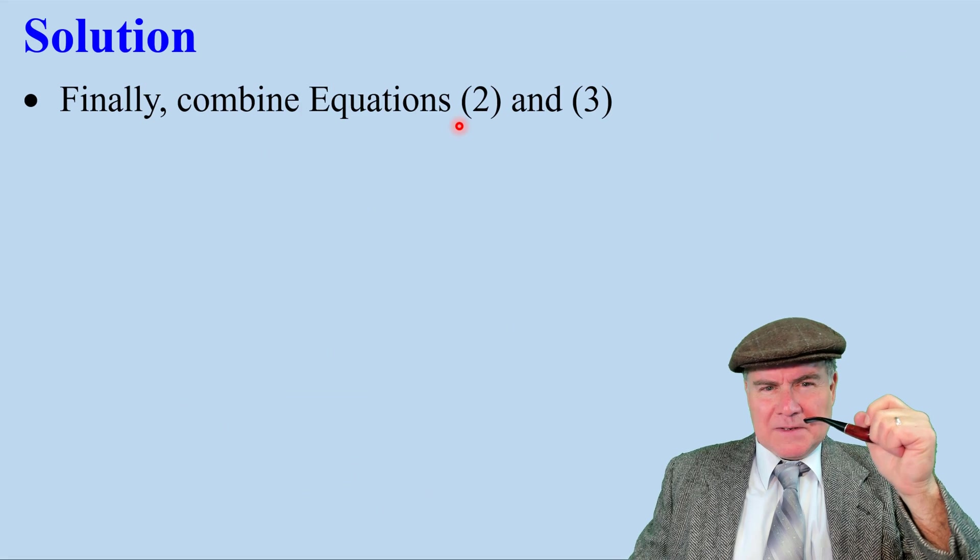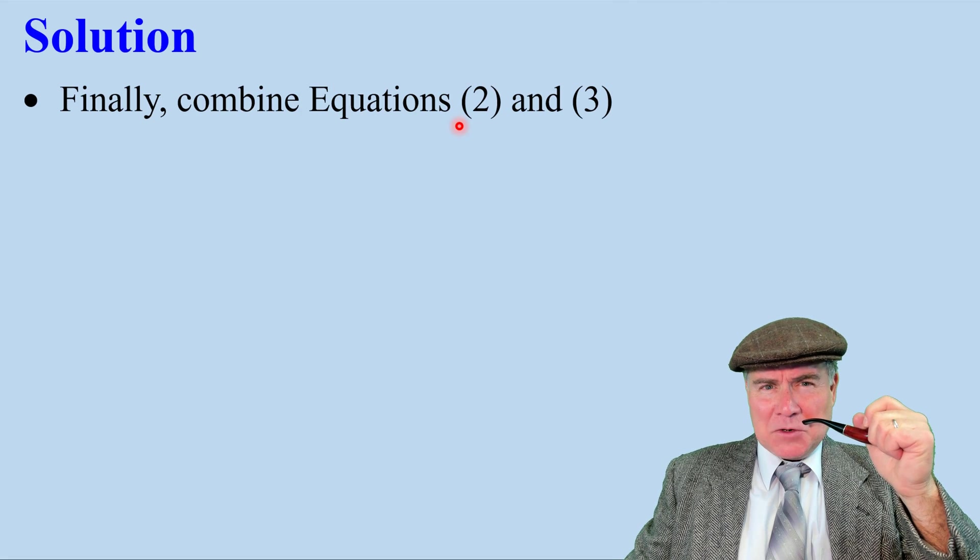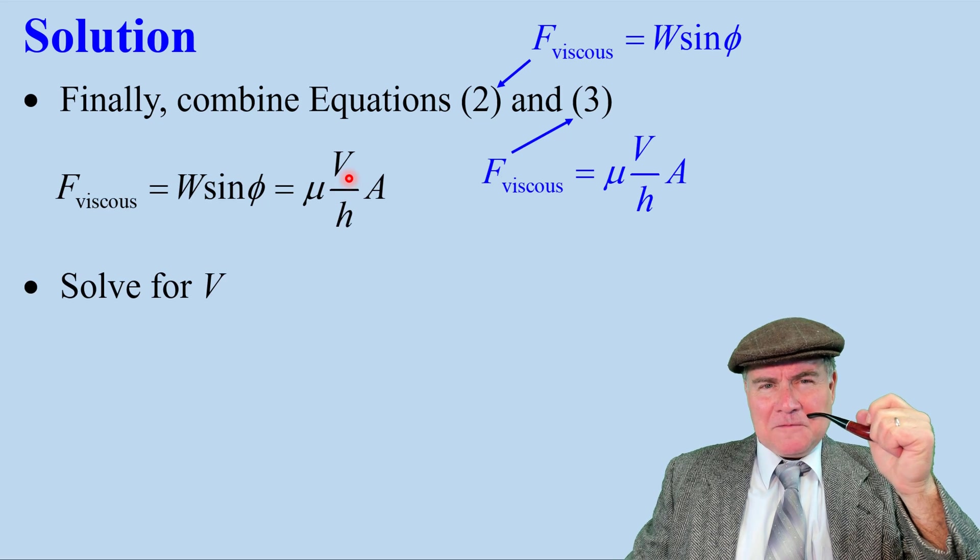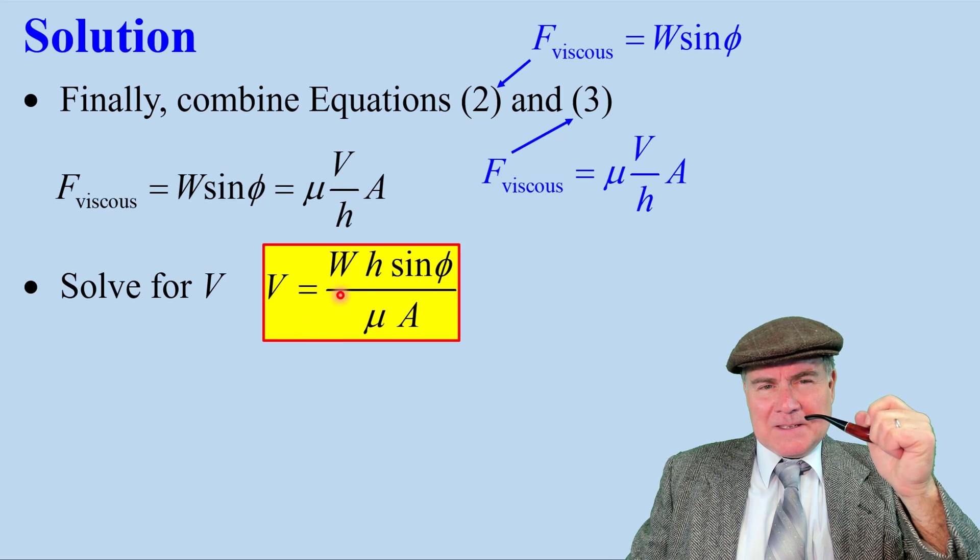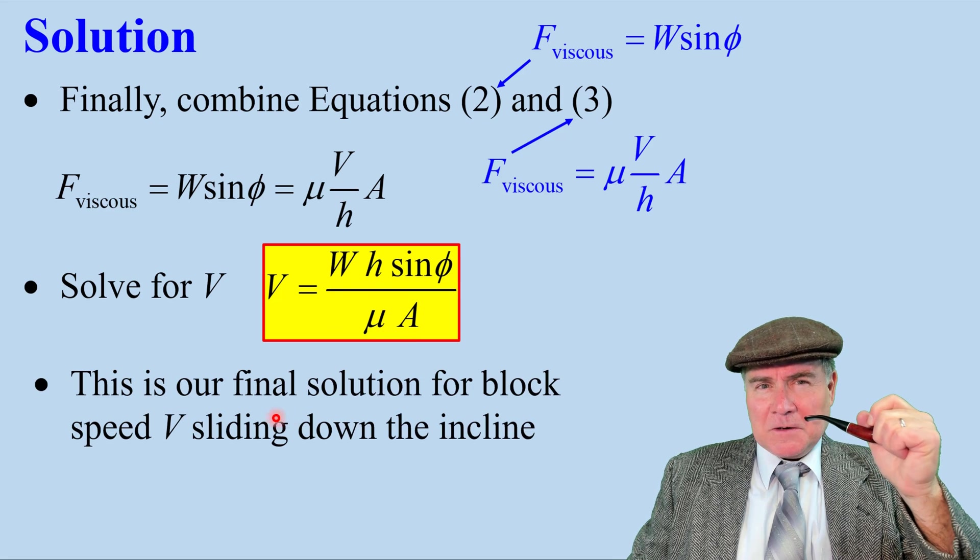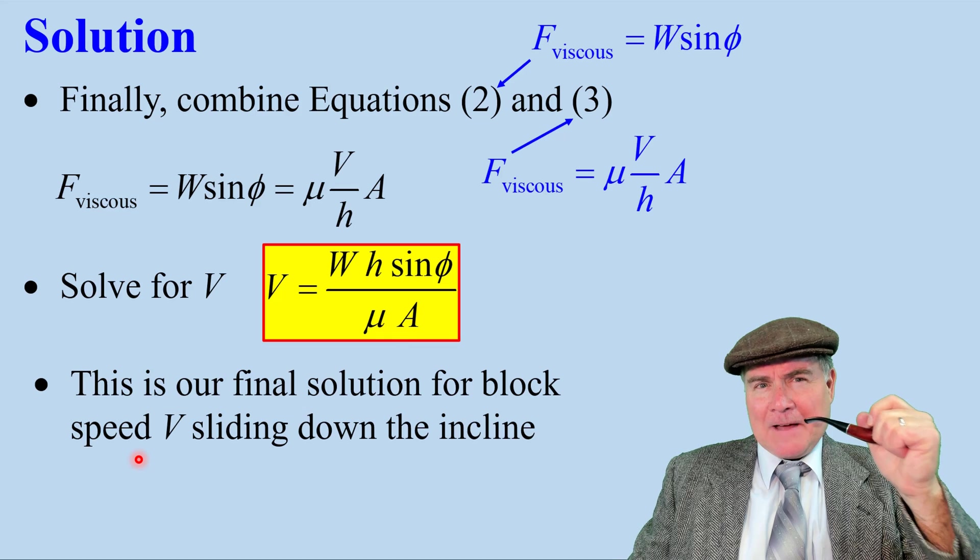We call this equation 3. Now all we do is combine equation 2, this equation, and 3, this equation. So we get this simply solved for v. Our final equation is v. It's W h sine phi over mu A. This is our final solution for block speed v sliding down the incline.